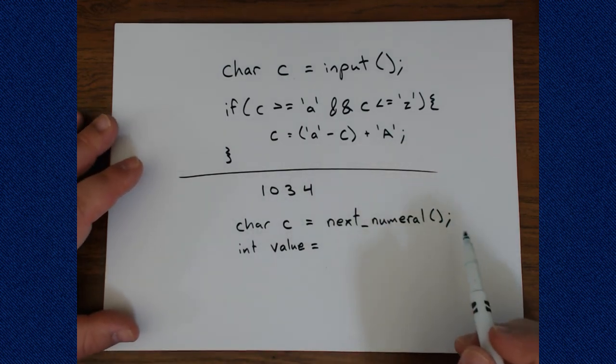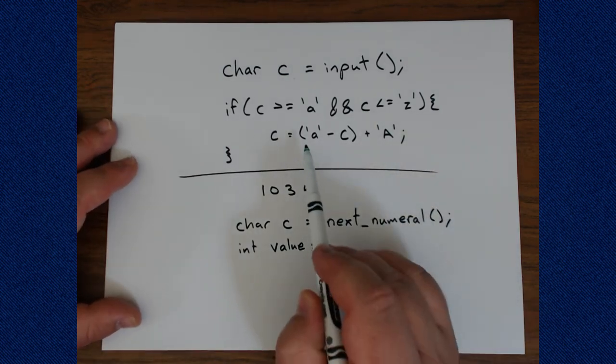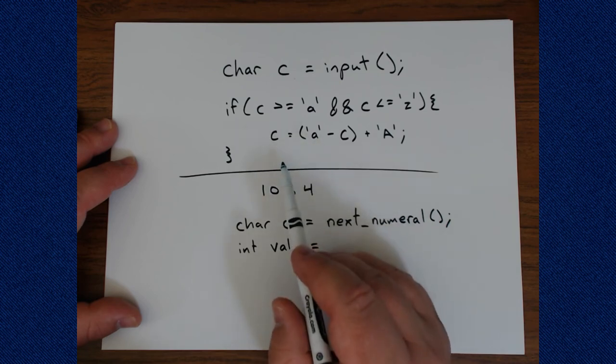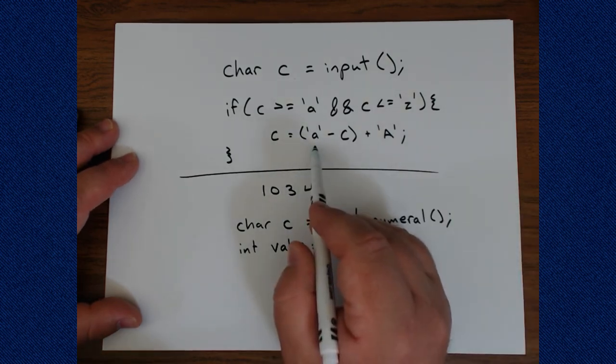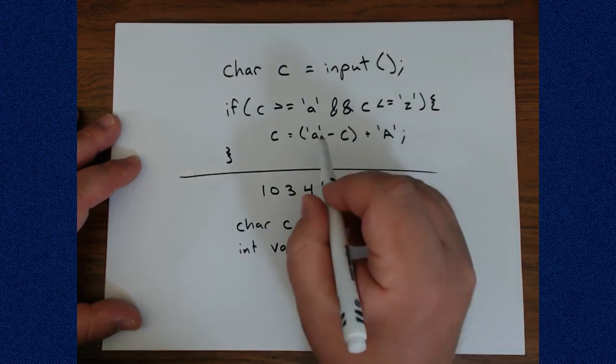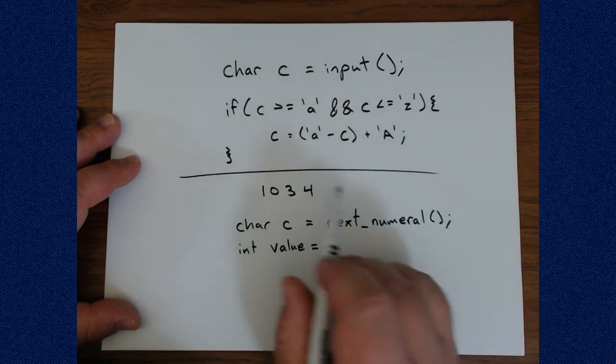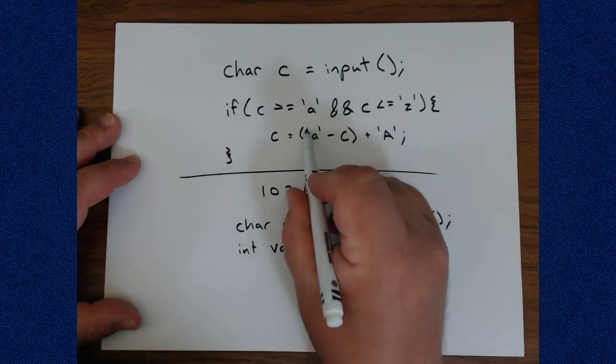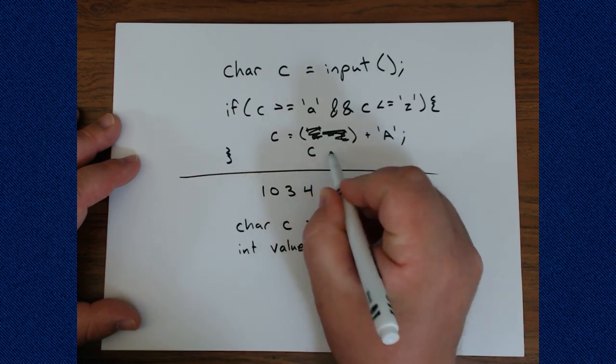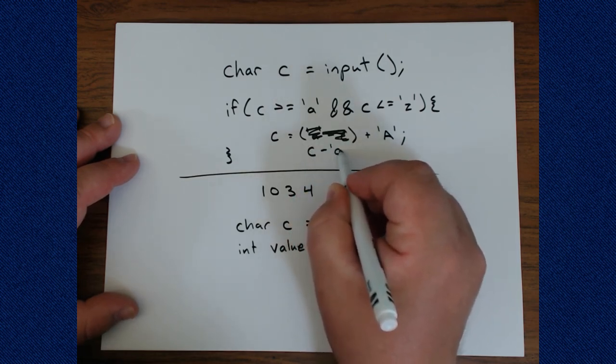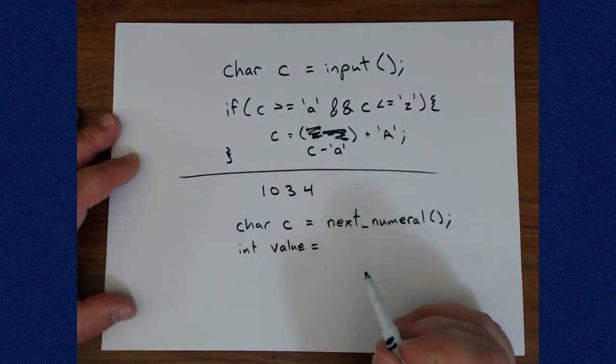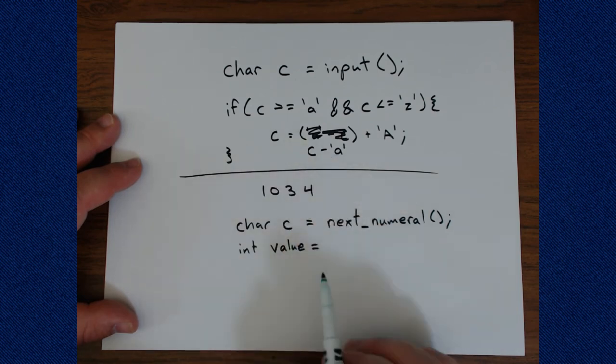And the way we can find that value directly is similar to what we did up here. Here we found, oh my goodness, this is actually backwards. So hopefully you're watching all the way through and didn't give up when this happened. And this should not be lowercase a minus c. This should be c minus lowercase a. Holy moly. Horrible mistake. Horrible mistake. But I'm sure we can all deal with the correction.